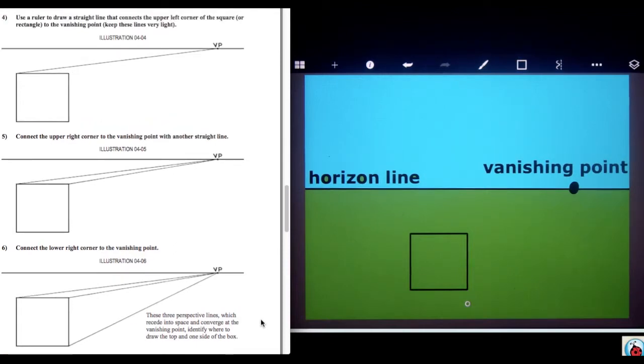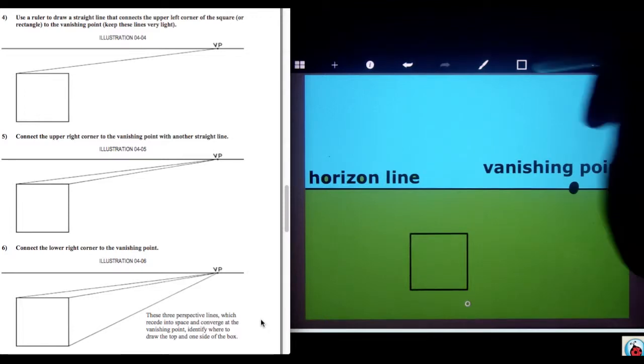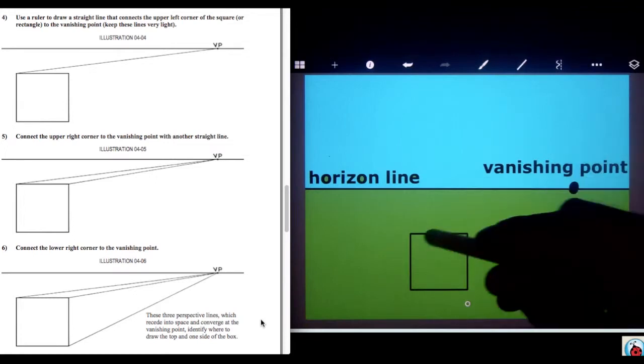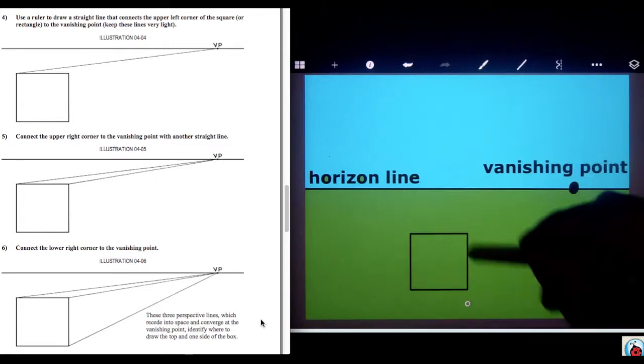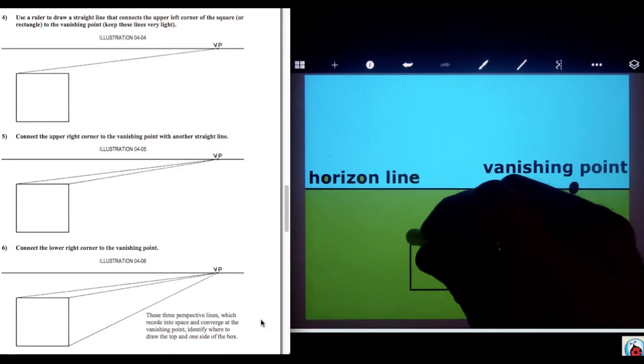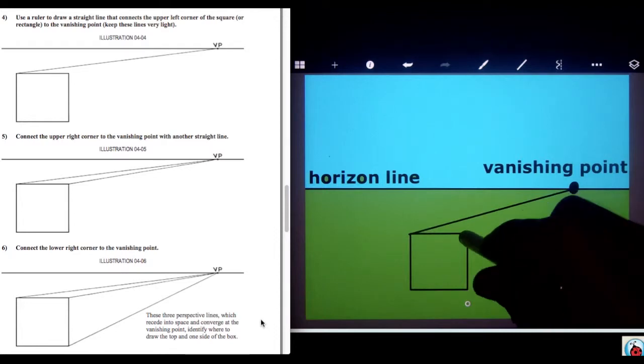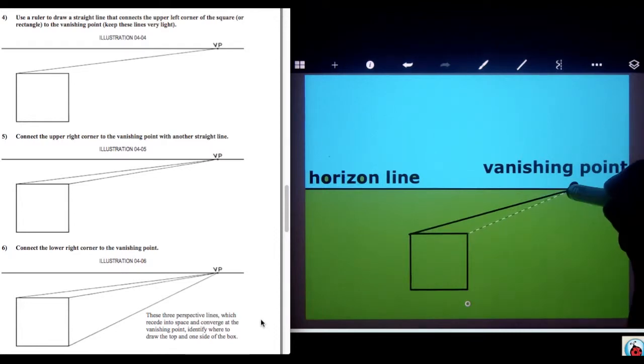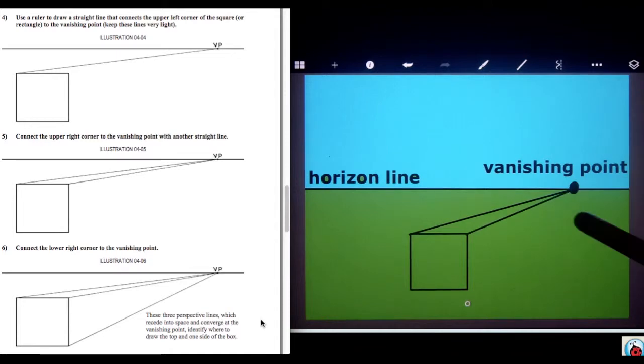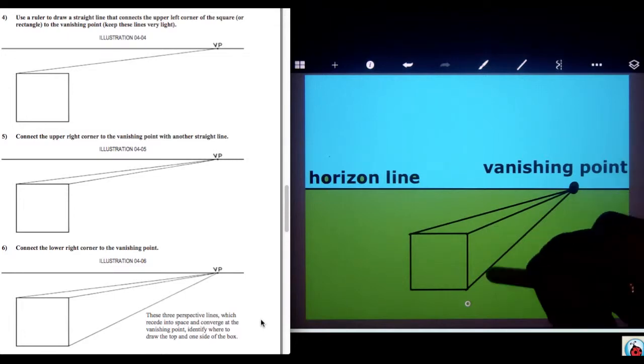Here are our next three steps. We're now going to use line tool to connect each one of the three vertices on this side of the square with that vanishing point. All of these lines from the vertices converge or come together on that one point in the distance.